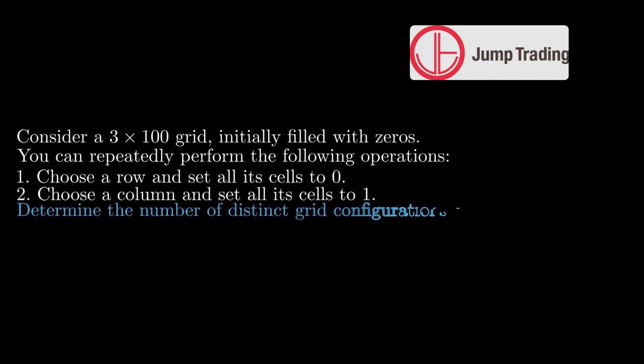Now let's look at a different problem that was asked in a Jump Trading interview. Consider a 3 cross 100 grid, initially filled with 0s. You can repeatedly perform the following operations: Choose a row and set all its cells to 0, or choose a column and set all its cells to 1. Determine the number of distinct grid configurations that can be produced using these operations. Try to solve this on your own.